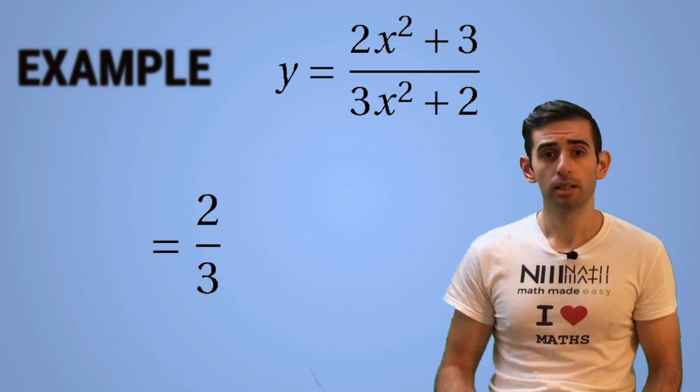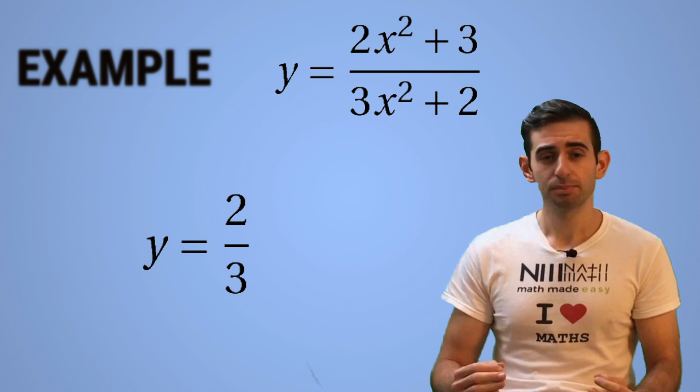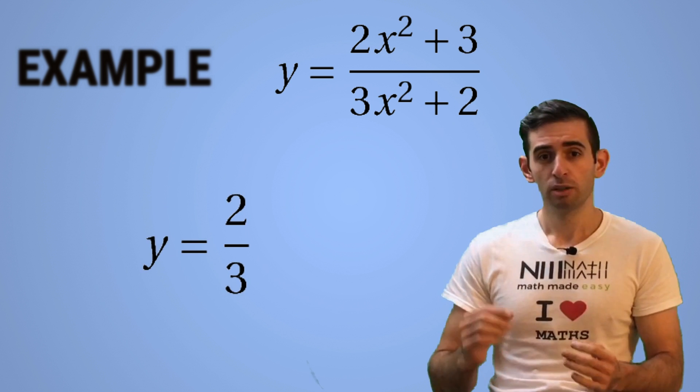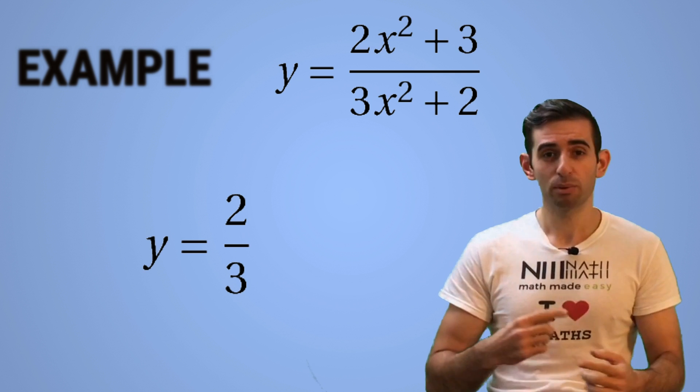Two over three, right? Just the coefficients of x squared on top, two, and on bottom, three. And the ratio two over three. That is how quick you can find the horizontal asymptotes. So then let's just look at one more example for practice.